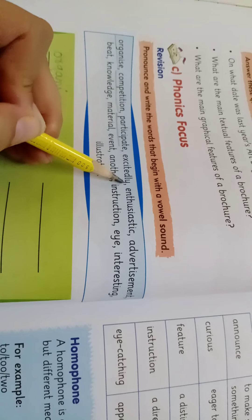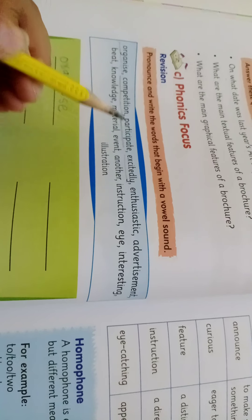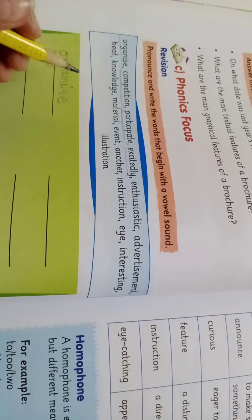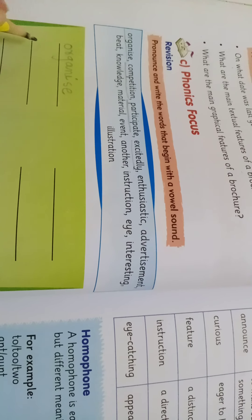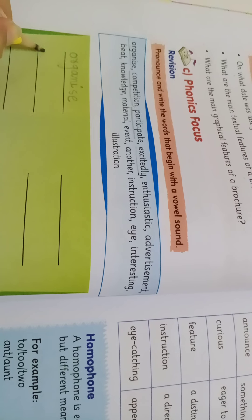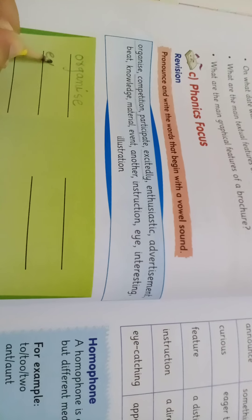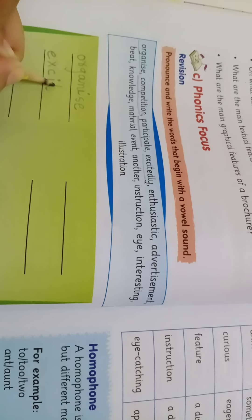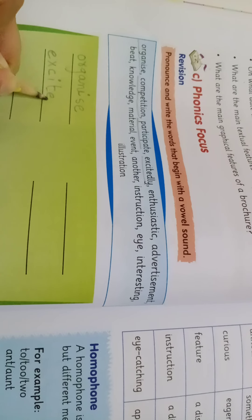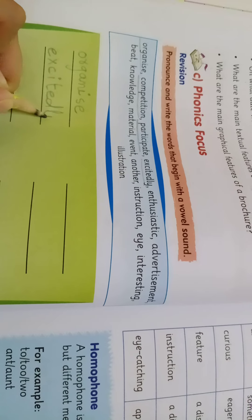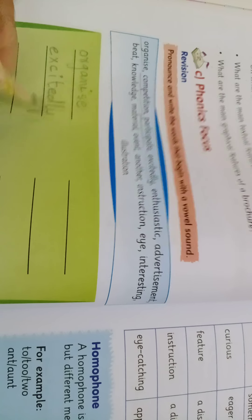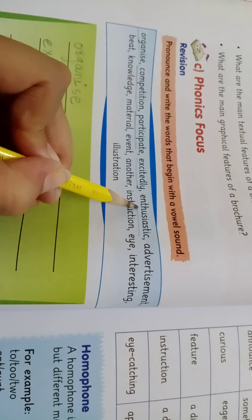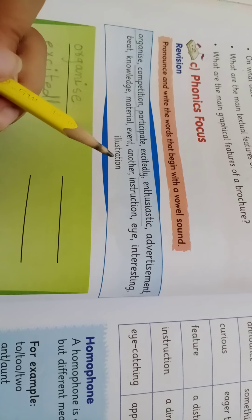The next word is 'excitedly.' Its first letter is a vowel, so we will list it down. Excitedly — E-X-C-I-T-E-D-L-Y.